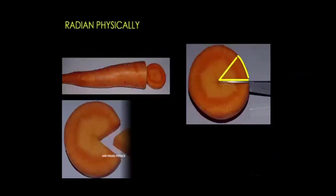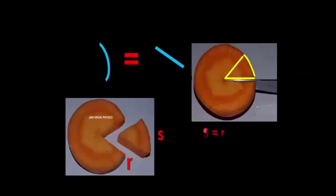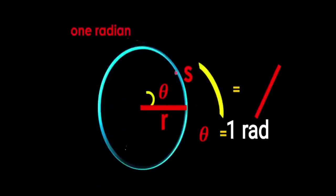We can witness plane angle through an activity. Cut a slice of carrot and measure its radius from the center. Measure an arc along the circumference of the carrot slice such that the arc length is equal to the radius. Then join both ends of the arc with the center of the circle.